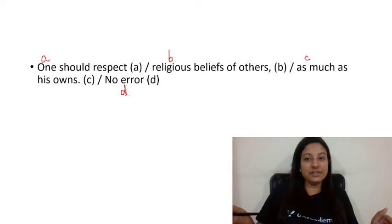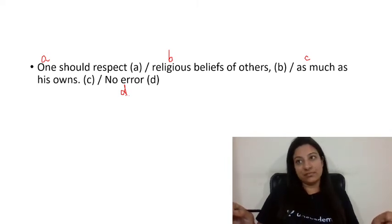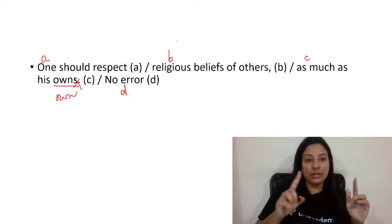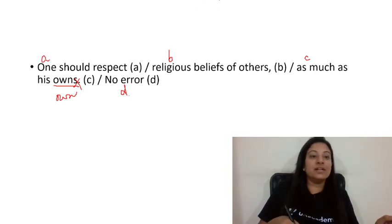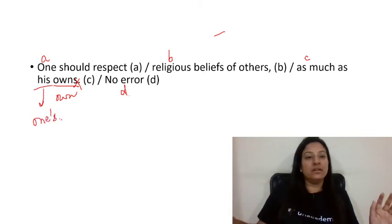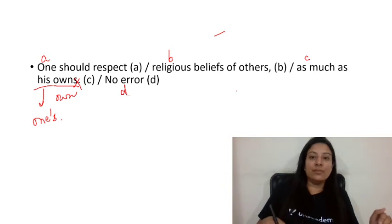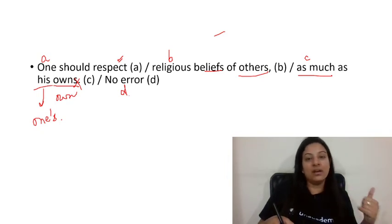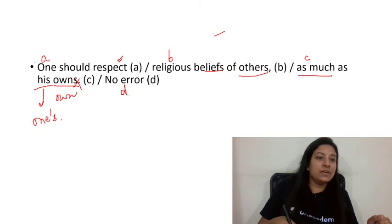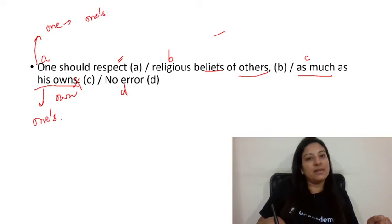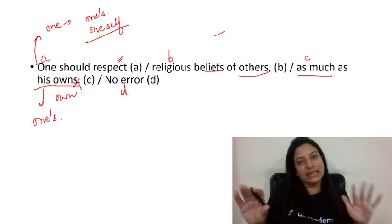Question 8: 'One should respect religious beliefs of others as much as his owns.' There are two errors here. First, 'his owns' should be 'his own' — 'owns' with an 's' is wrong. Second, 'his' is also incorrect here — when 'one' is used as an indefinite pronoun, its possessive should also be 'one's'. So the correct form is 'one's own'. Similarly, the reflexive would be 'oneself'.